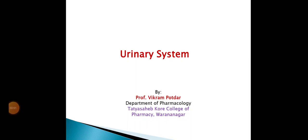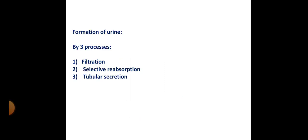Today we are going to learn one of the important functions of the urinary system — that is the formation of urine. There are three main phases of urine formation: phase one is filtration, phase two is selective reabsorption, and phase three is tubular secretion.